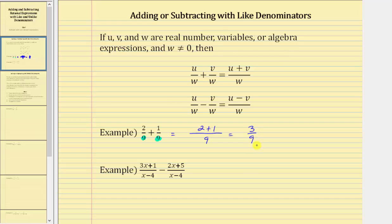The sum is three ninths, but this fraction does simplify because there is a common factor of three between the numerator and denominator. To simplify, we divide the numerator and denominator by three. Three divided by three is equal to one, and nine divided by three is equal to three. The simplified sum is one third.